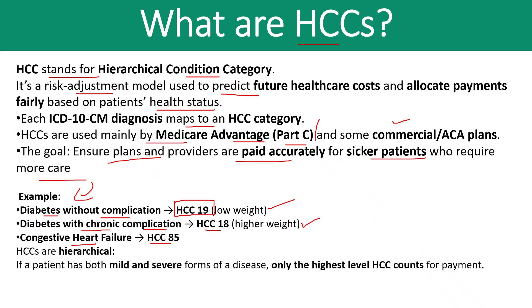Regarding why there is a low weight and higher weight, we have a concept called trumping. When a patient has two conditions in the same session, we look for the higher severity one and drop the lower one, going with the highest severity. HCC 19 has low weightage, while HCC 18 with chronic complication has higher weightage. For example, take diabetes mellitus — if a patient has DM due to an underlying condition with ketoacidosis with coma, that is the higher severity.